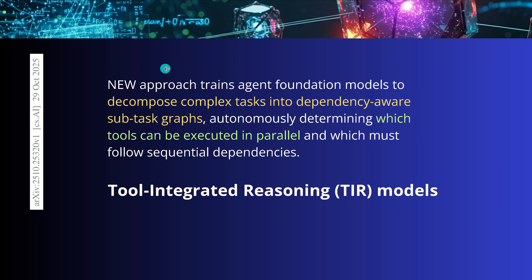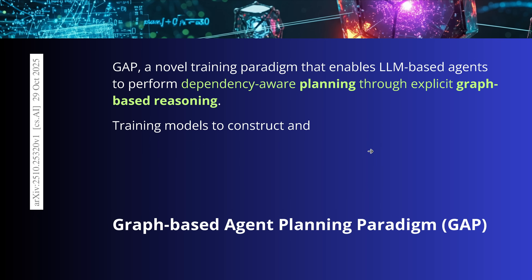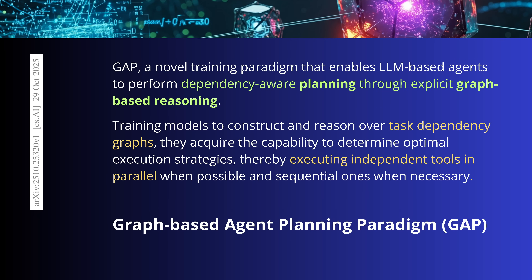We have a new approach to train agent foundation models like GPT-5 or whatever you have, to decompose complex tasks into dependency-aware subtask graph structures, where we can autonomously determine which tools can be executed in parallel in this network. In the GAP graph-based agent planning paradigm, we first perform a dependency-aware planning phase, where the AI has a graph-based reasoning process to figure out the dependencies.